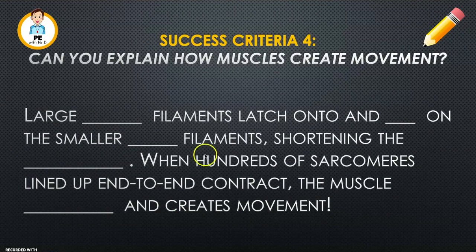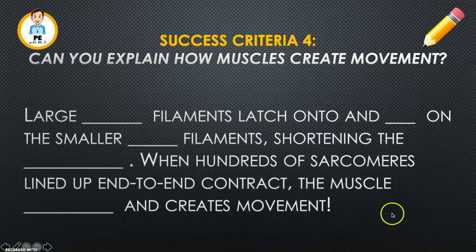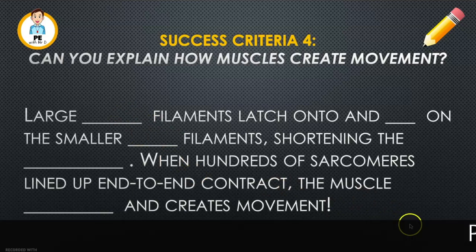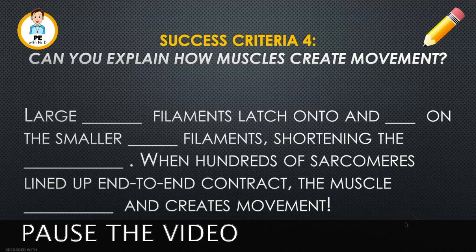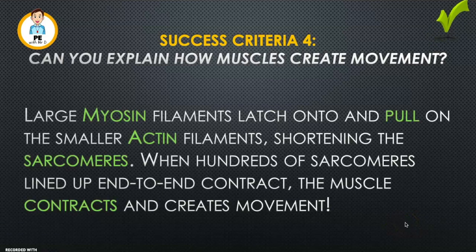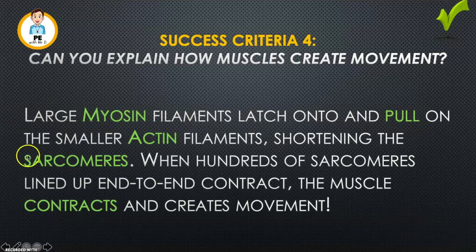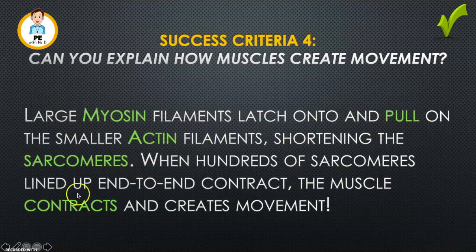Our fourth and final success criteria: can you explain how muscles create movement? Large myosin filaments latch onto and pull on the smaller actin filaments, shortening the sarcomeres. When hundreds of sarcomeres lined up end-to-end contract, the muscle contracts and creates movement.